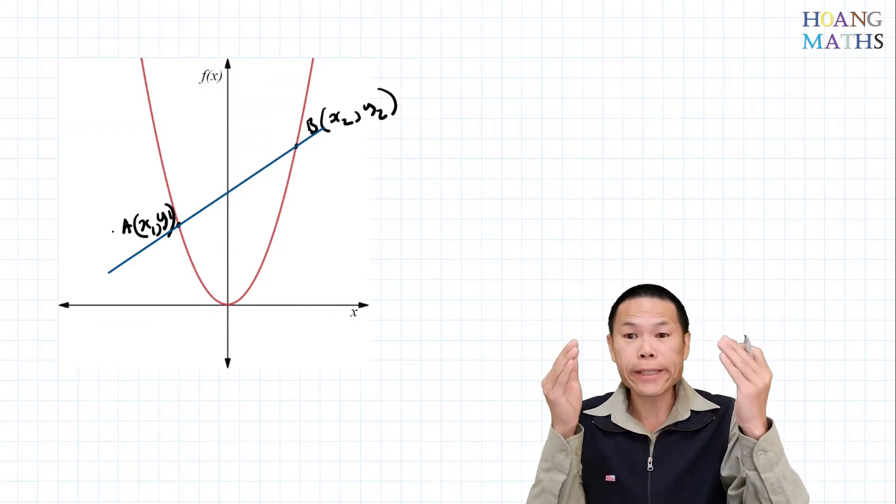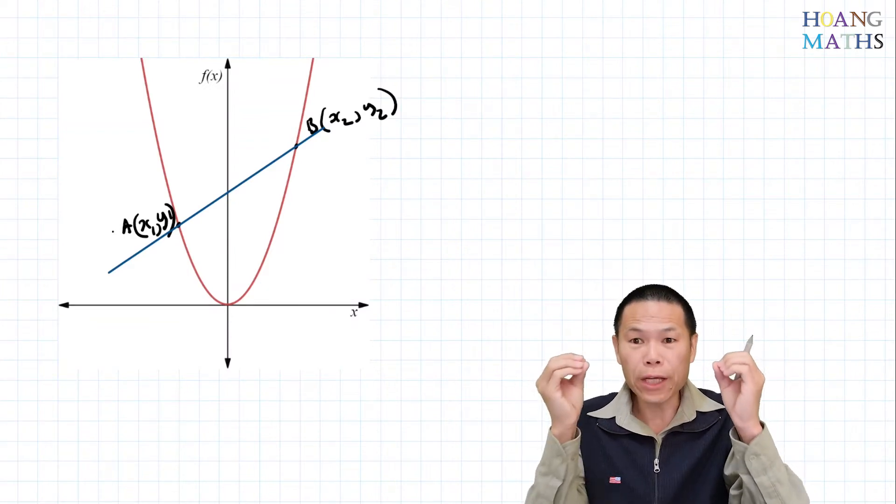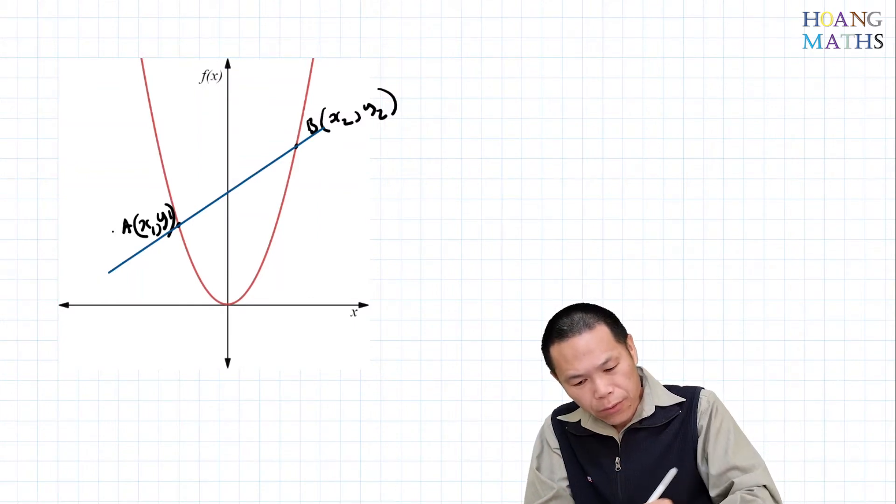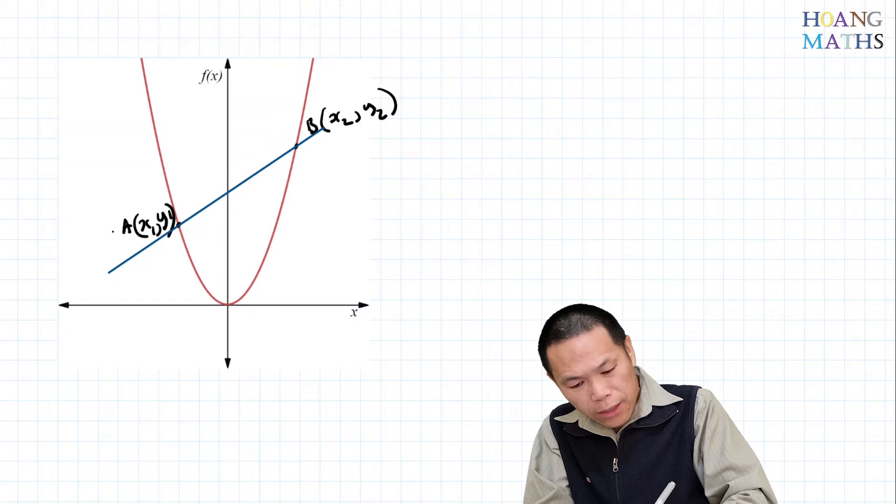This line here is called a secant. To find the gradient of this secant, which is the gradient of AB, remember we use rise over run.